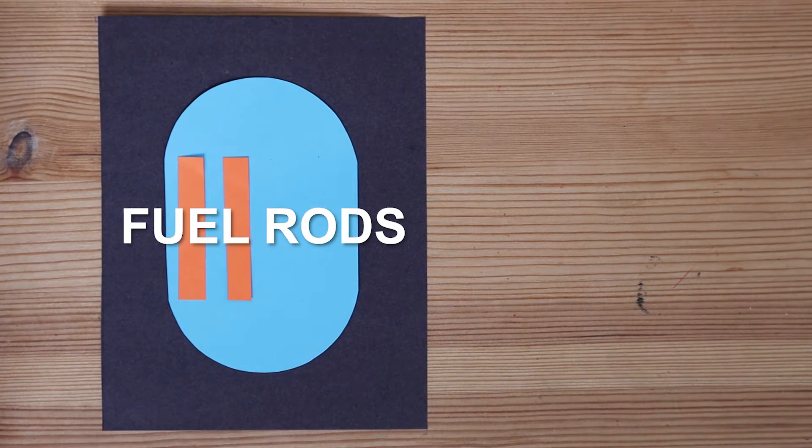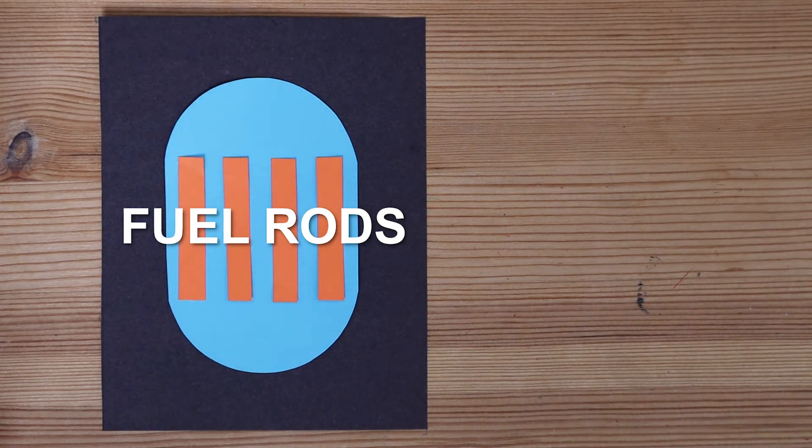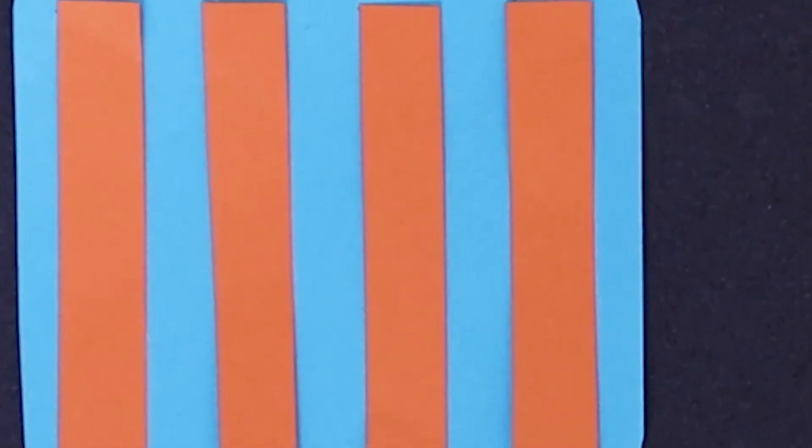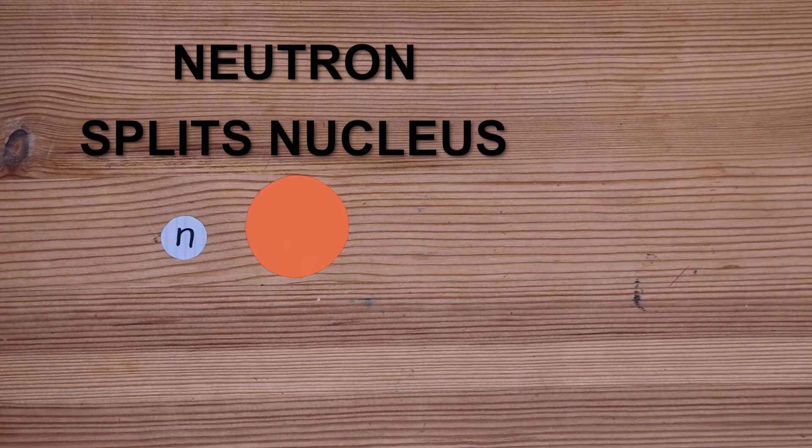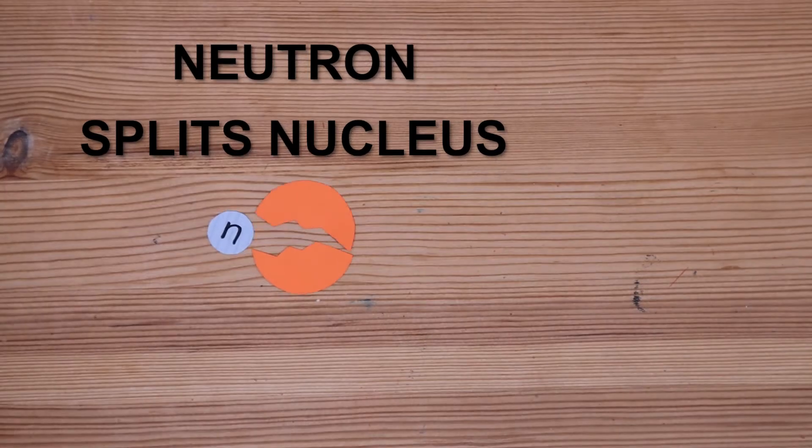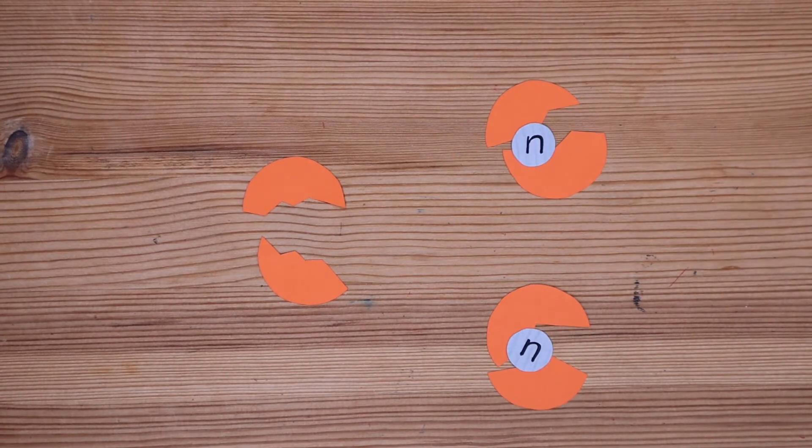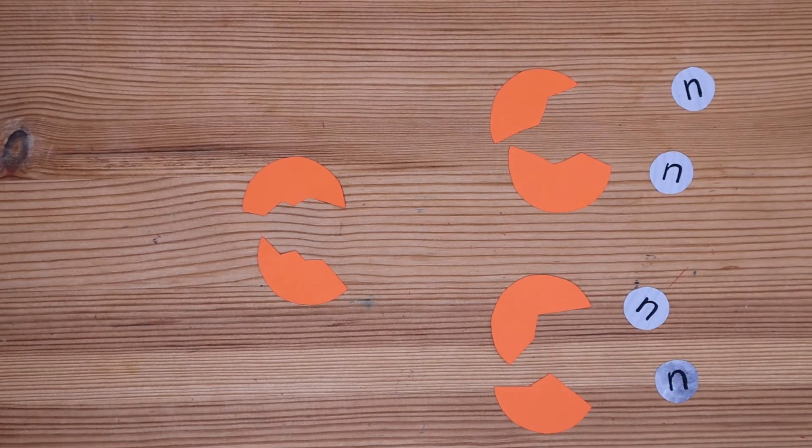We need some fuel rods inside the reactor. They can be made of uranium or plutonium. What exactly happens inside of a fuel rod? An incoming neutron splits the uranium or plutonium nucleus. During this process, another neutron will be released and the two neutrons can move on to cause more fission reactions in other uranium or plutonium nuclei.